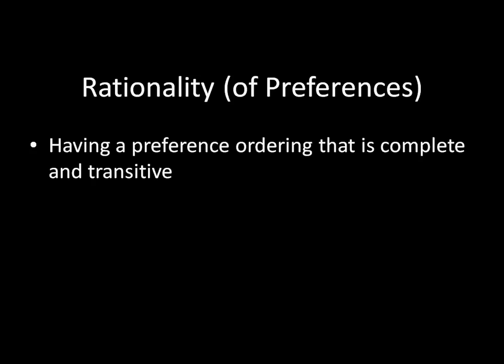Full stop. I don't need to know anything else other than whether your preference ordering is complete and transitive. If it's both complete and transitive, you are rational. If your preference ordering is not complete and transitive — maybe it's transitive but not complete, or maybe it is complete but not transitive — then you are not rational. That's it. That's all it is.